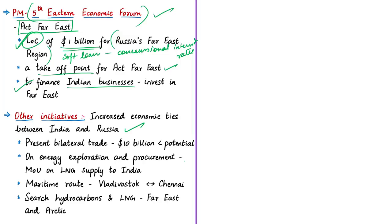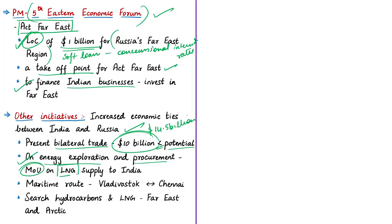Currently, the value of bilateral trade between India and Russia is 10 billion dollars, which the author says is far behind the potential compared to the value of their strategic partnership, including defense and security. In the past year alone, India had defense deals worth 14.5 billion dollars with Russia, including the S-400 deal. During the forum, India and Russia signed important agreements on energy exploration and procurement, including an MoU on cooperation on liquefied natural gas supplies to India, and an agreement on opening a maritime route from Vladivostok to Chennai for energy trade.